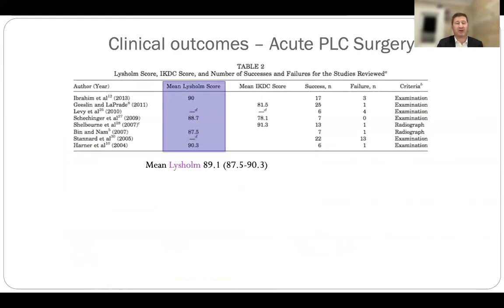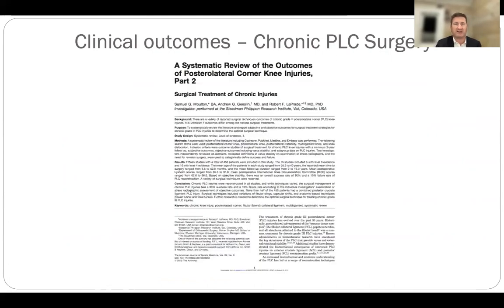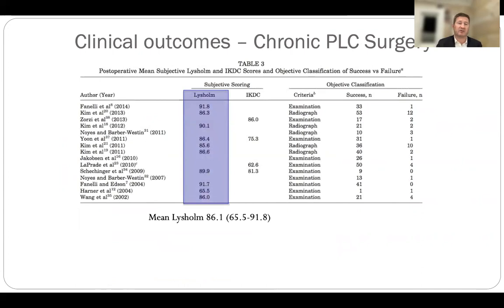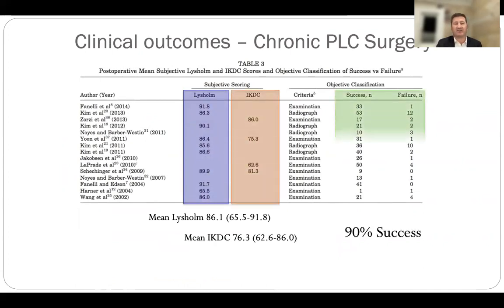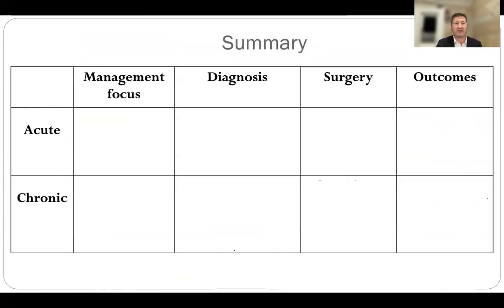The outcomes are good. In the Rob LaPrade meta-analysis: mean Lysholm score was almost 90, IKDC of 84, and 81% overall success — but 91% success in cases where reconstruction was added. In the chronic case it was similar: mean Lysholm score of 86, IKDC of 76, and 90% overall success. There is not enough data to suggest one surgical technique over the other.